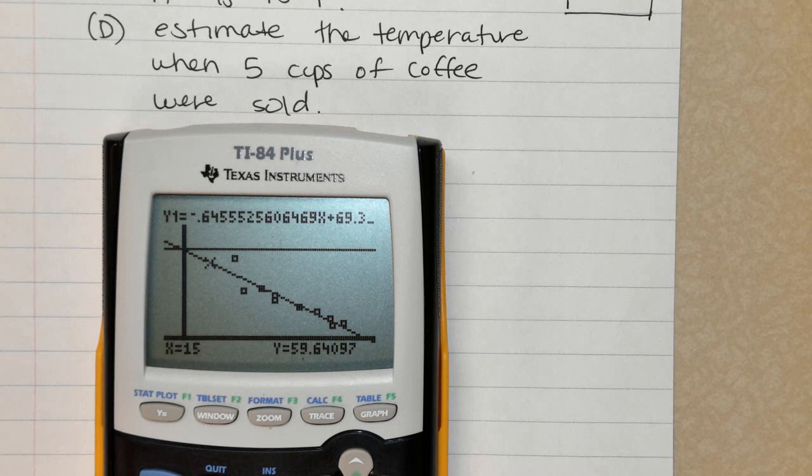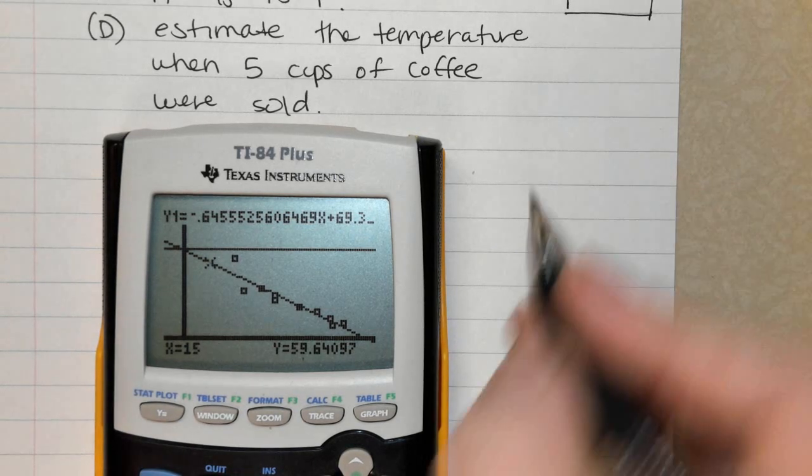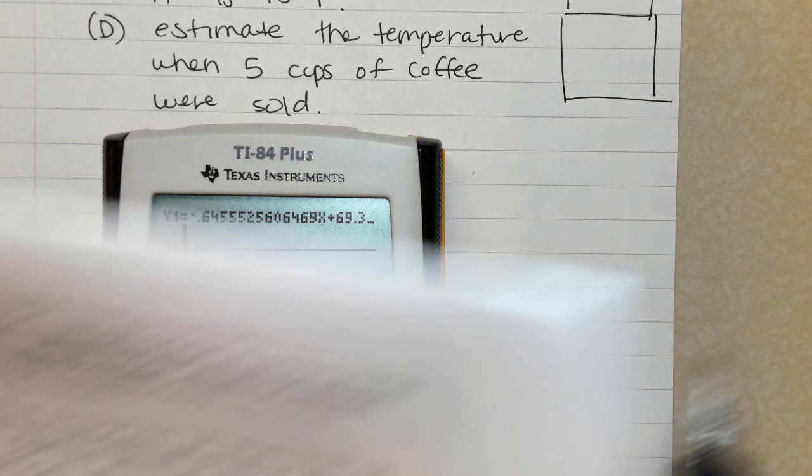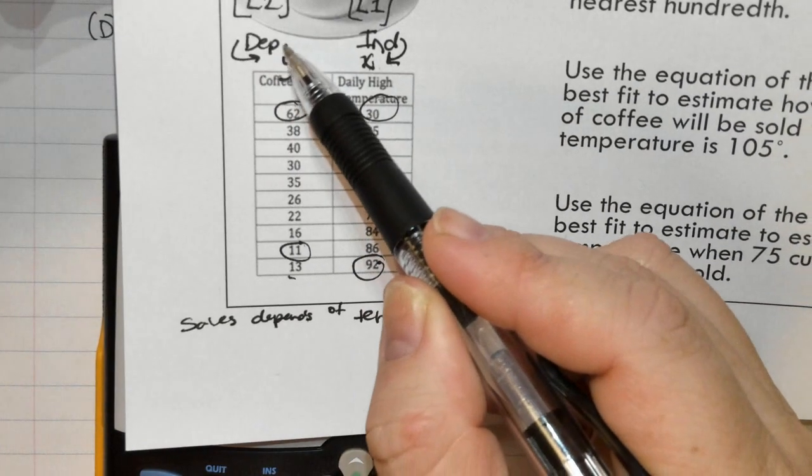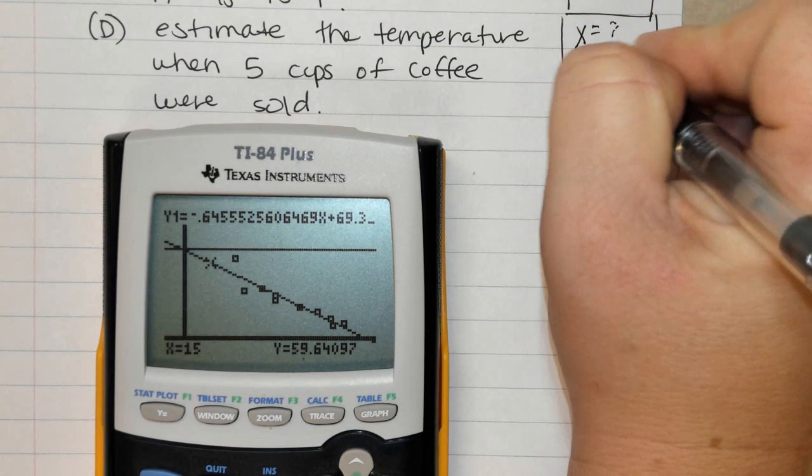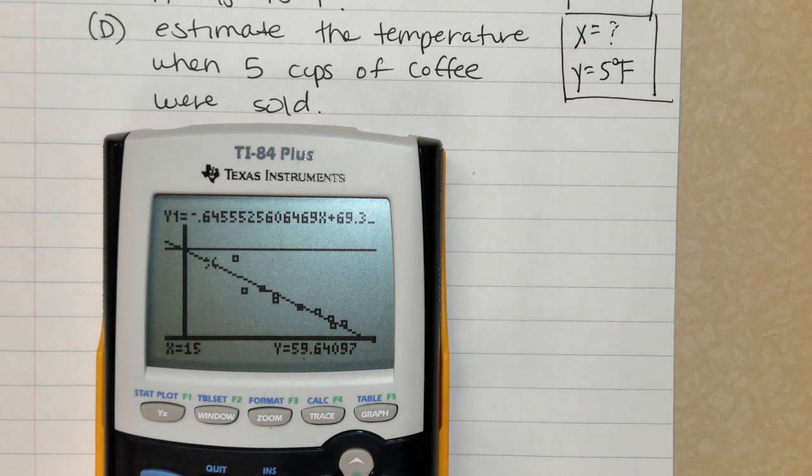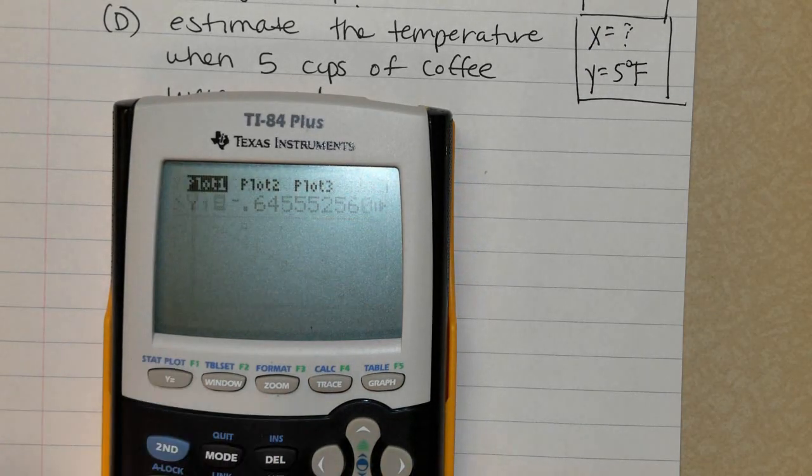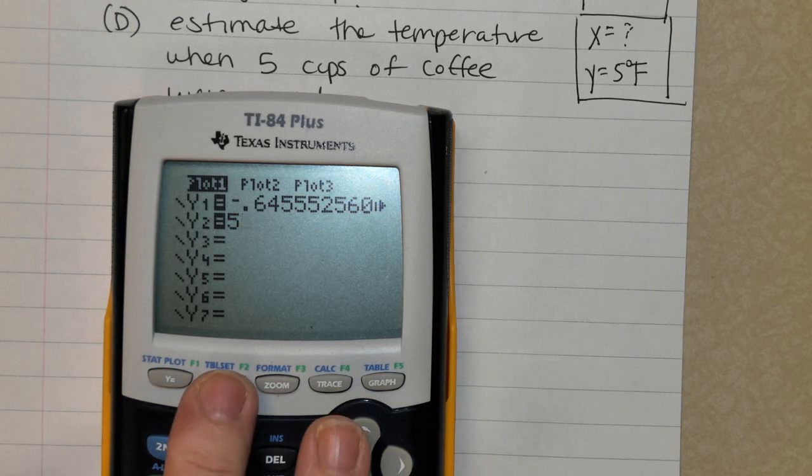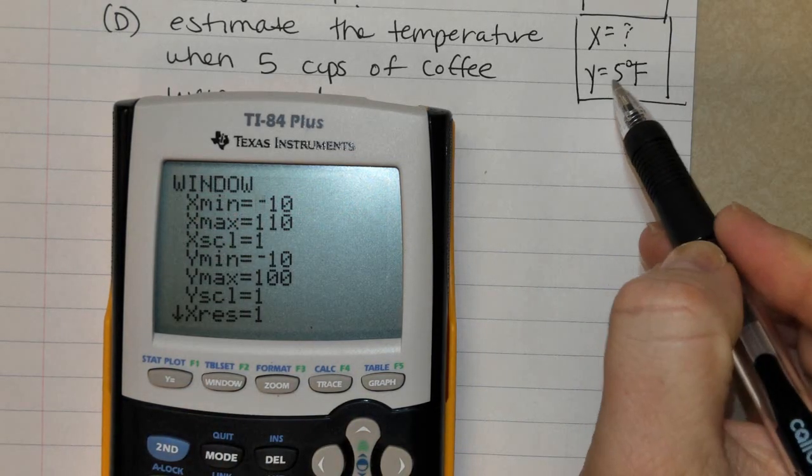Estimate the temperature when five cups of coffee were sold. So I'm given the number of cups of coffee, which is a Y. I'm given Y. You want to figure out what X is. So I'm going to go back to Y equals, and I don't want to know 70 anymore. That was the first part. I'm going to clear out the 70 and change it to a five. Before I do anything more, I want to hit Windows. Five is a Y value. Let's look at the Ys. Is five in here? Okay, it sure is.